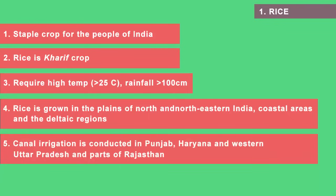Due to the advancement of canal irrigation and tube wells, places like Punjab, Haryana, Western Uttar Pradesh and Rajasthan — which receive very less rainfall — are now also able to grow rice through modern irrigation facilities.